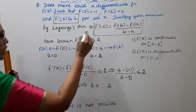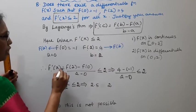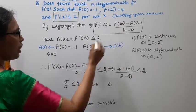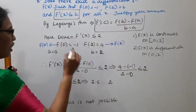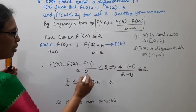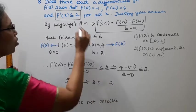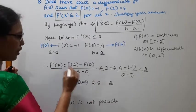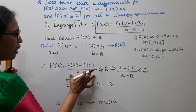Now, according to Lagrange's theorem, f'(c) = [f(b) - f(a)] / (b - a) = [f(2) - f(0)] / (2 - 0). This should be less than or equal to 2, which is the given condition.